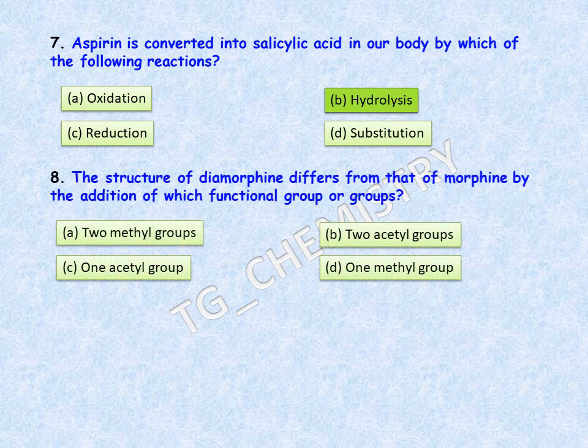Next question: the structure of diamorphine differs from that of morphine by the addition of which functional group or groups? Options are: A, 2 methyl groups; B, 2 acetyl groups; C, 1 acetyl group; D, 1 methyl group. The correct answer is option B, 2 acetyl groups.